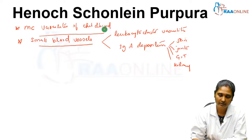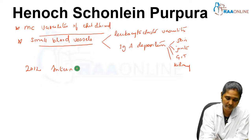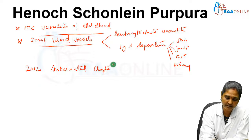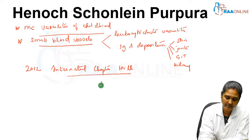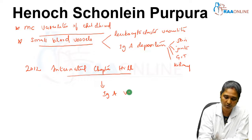According to the 2012 International Chapel Hill Consensus Conference, HSP — Henoch-Schönlein Purpura — has been renamed and is now called immunoglobulin A vasculitis.